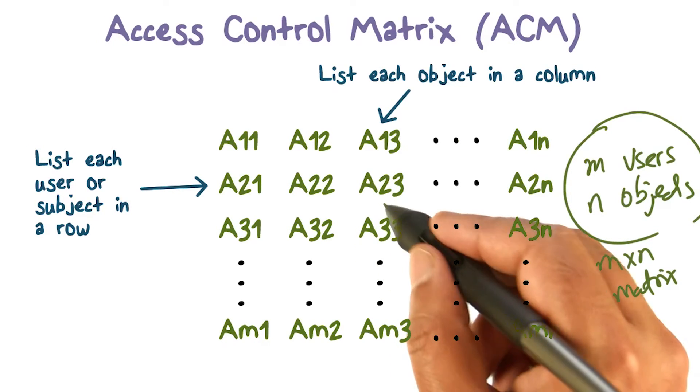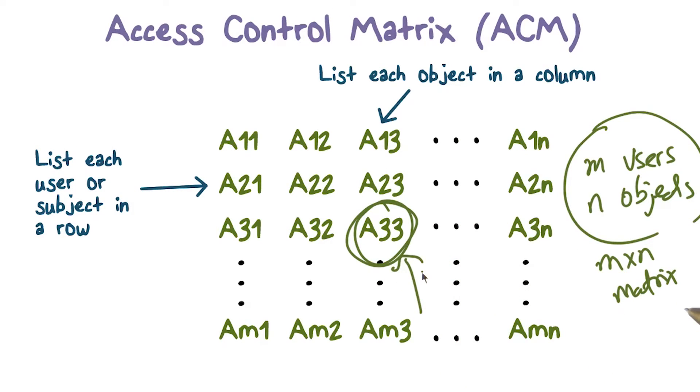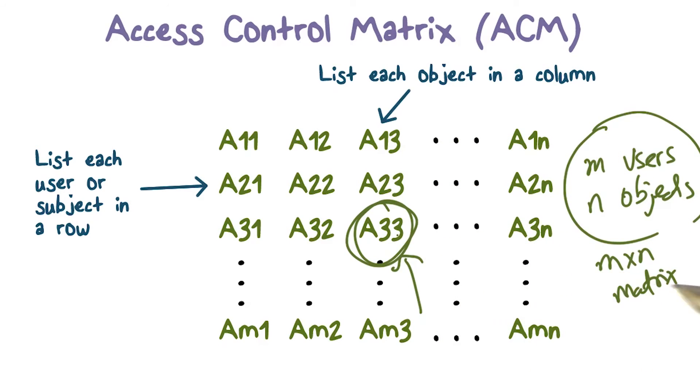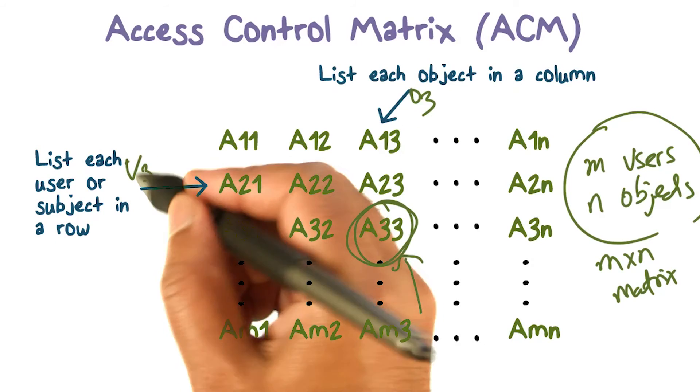If you focus on a particular entry, remember this is what access user 3 has for object 3. A33 is going to be a subset of the access rights, describing how this object can be accessed, object O3, for example, for user 3 here.